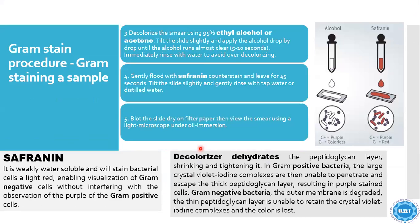For the gram staining procedure using alcohol and safranine: decolorize the smear using 95% ethyl alcohol and acetone. Tilt the slide and apply drops of alcohol until the alcohol runs almost clear, 5 to 10 seconds. Immediately rinse with water to avoid over-decolorizing. Then gently flush with safranine counter stain and leave for 45 seconds. Tilt the slide slightly and gently rinse with tap water or distilled water.